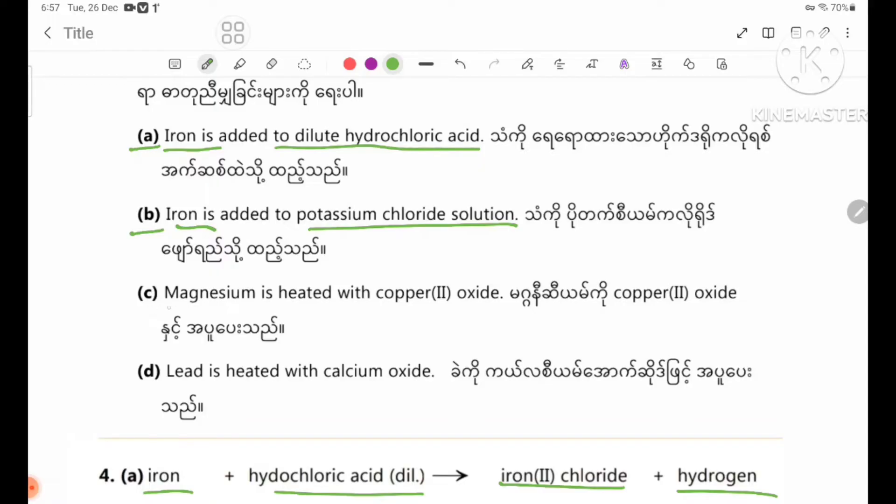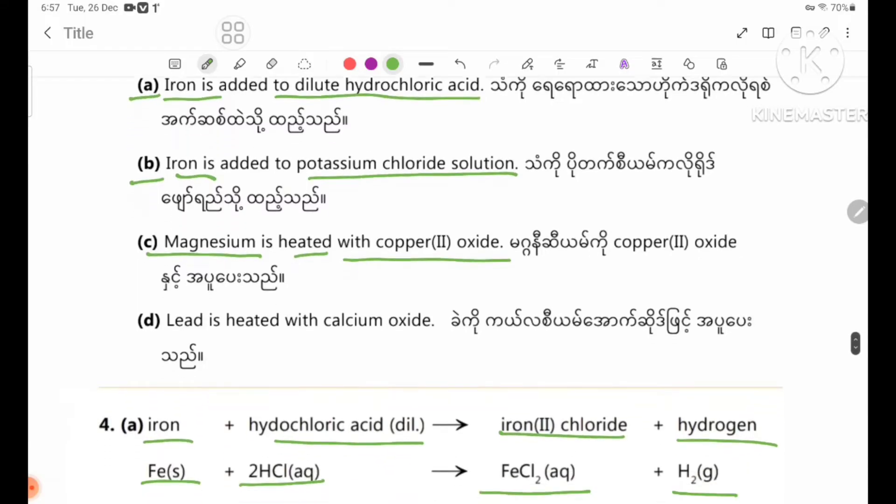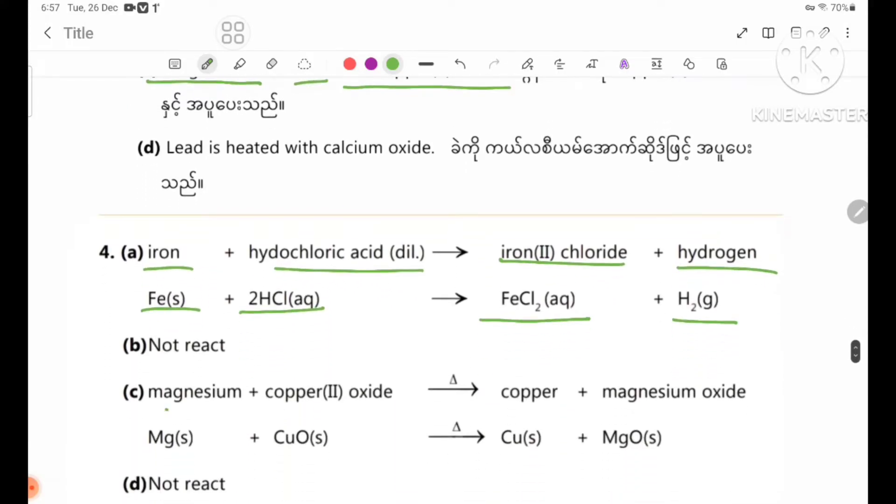Number C: Magnesium is heated with copper oxide. The equation is Mg solid plus CuO solid forms Cu solid plus MgO solid when heated.